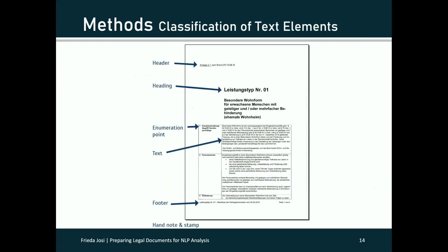Now we come to the text elements on the document page. Here is a page example from a document. One text element is marked for each of the text classes: header, heading, enumeration point, text, or photo. There is no handwritten note or stamp on this page, but it occurs frequently enough in our legal documents, so we have added this class for the classification.